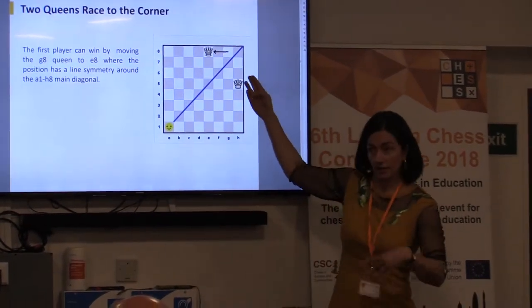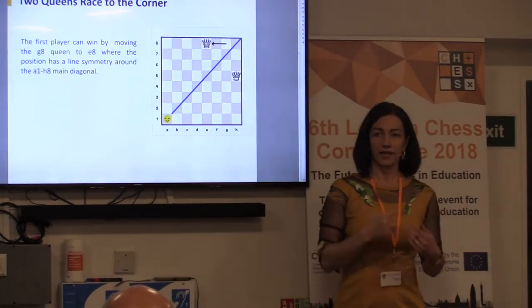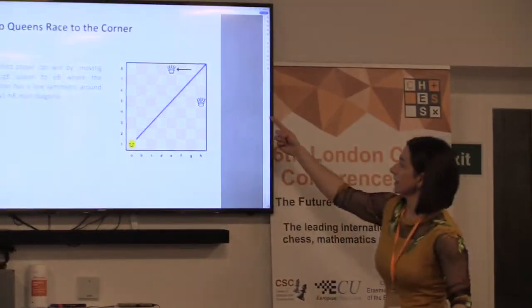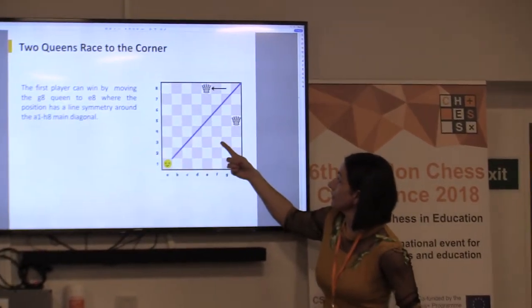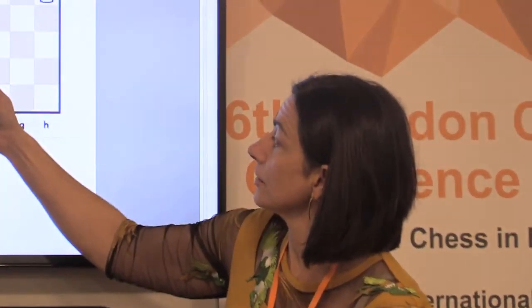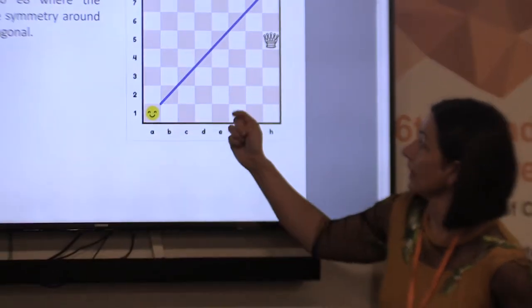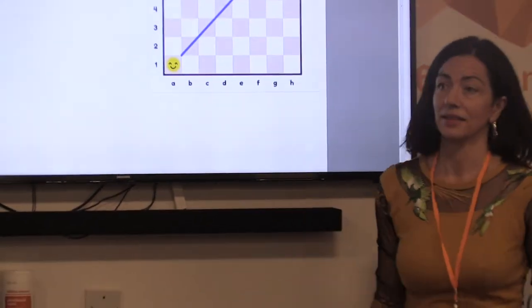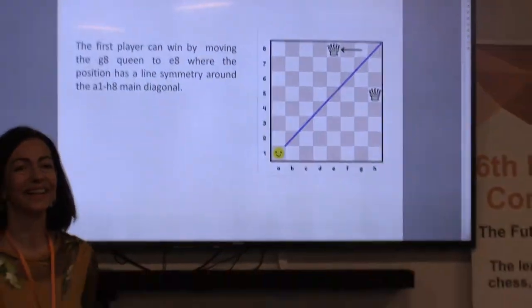So let's say I go there. Second player goes to f3, then I go to c6. Second player goes to e3, I go to c5. Then b3, c4. C2, b3 — and then the player loses. That game can be played with any number of queens, but the normal condition is last player wins — the first one to run out of legal moves loses.